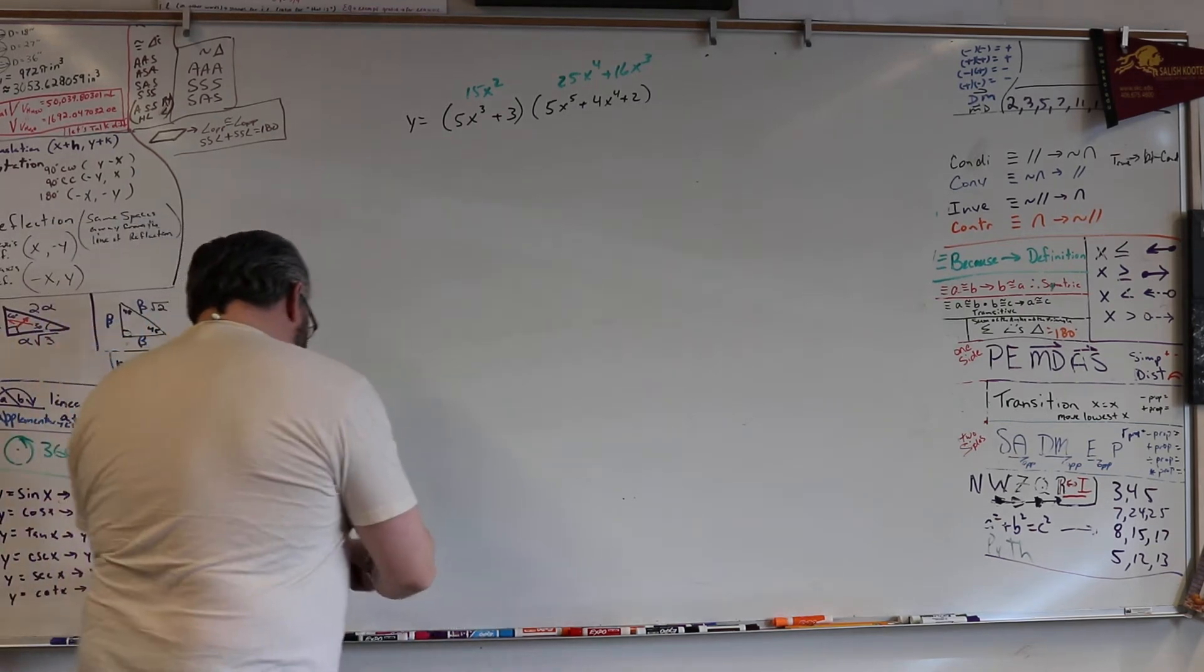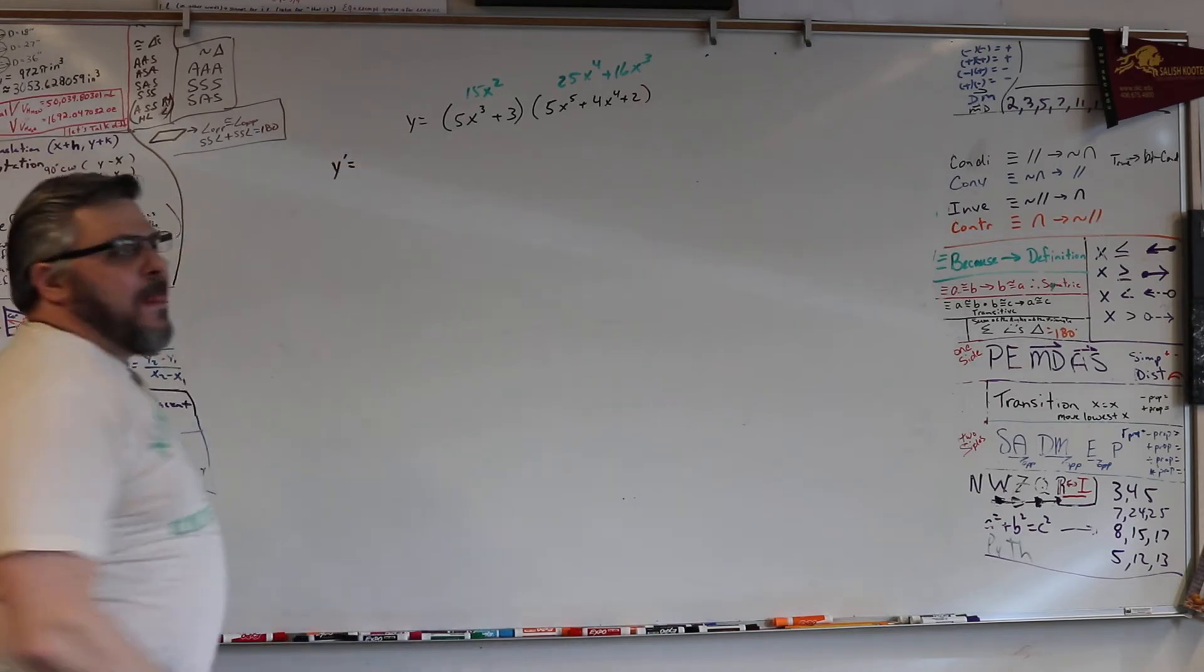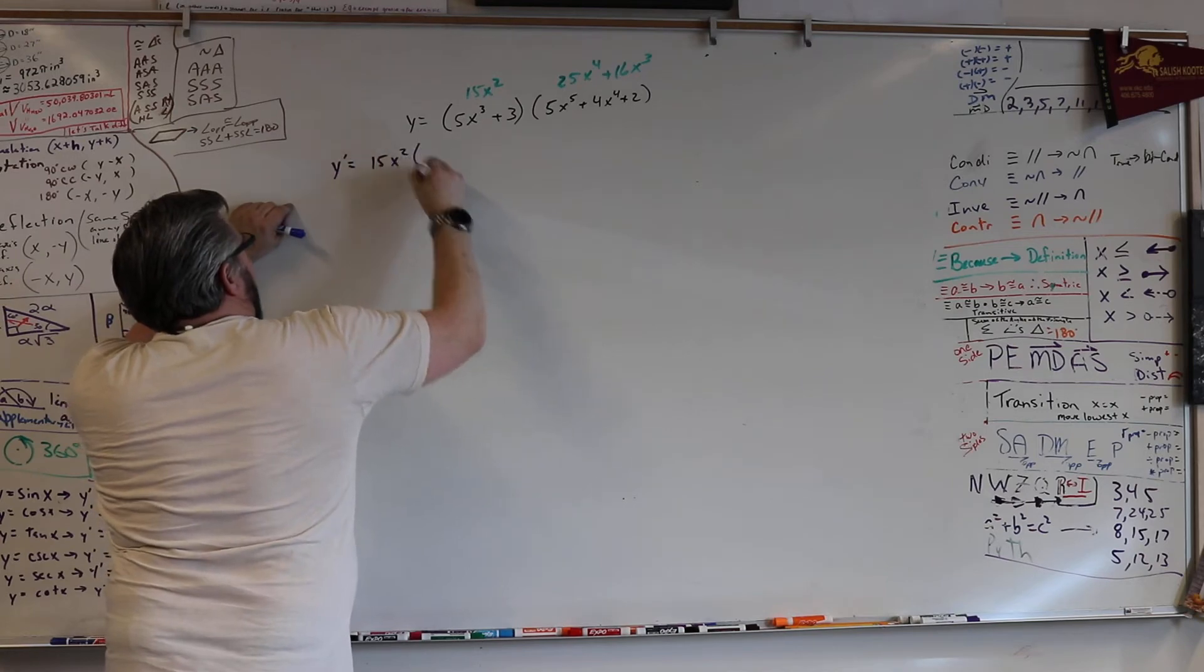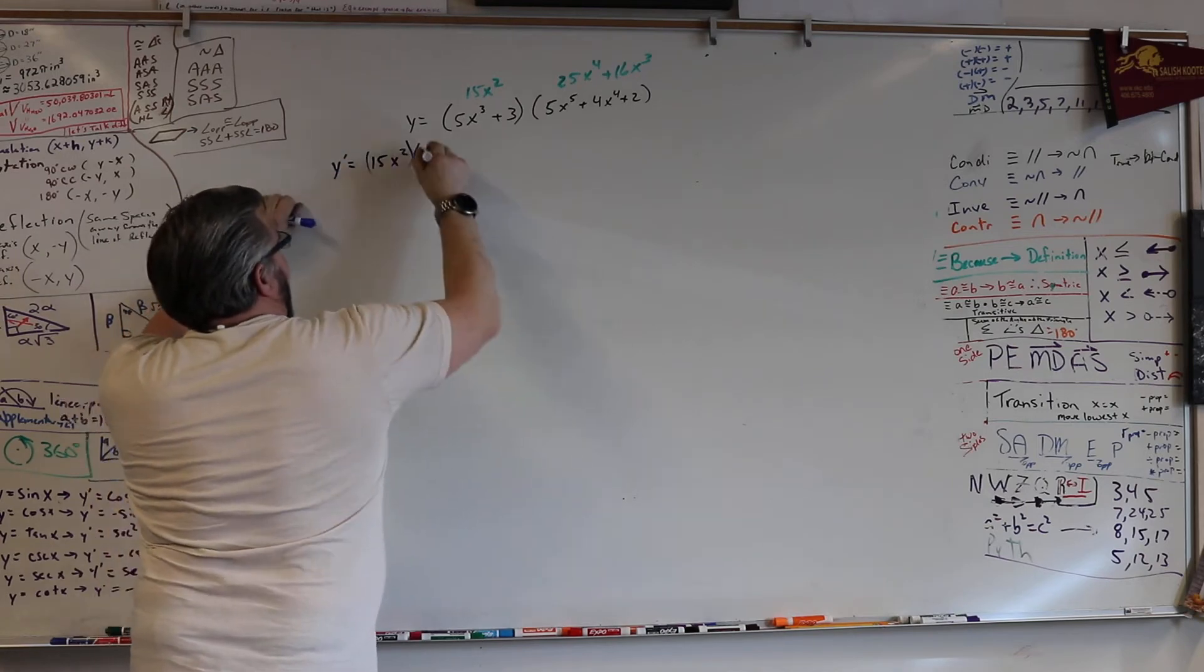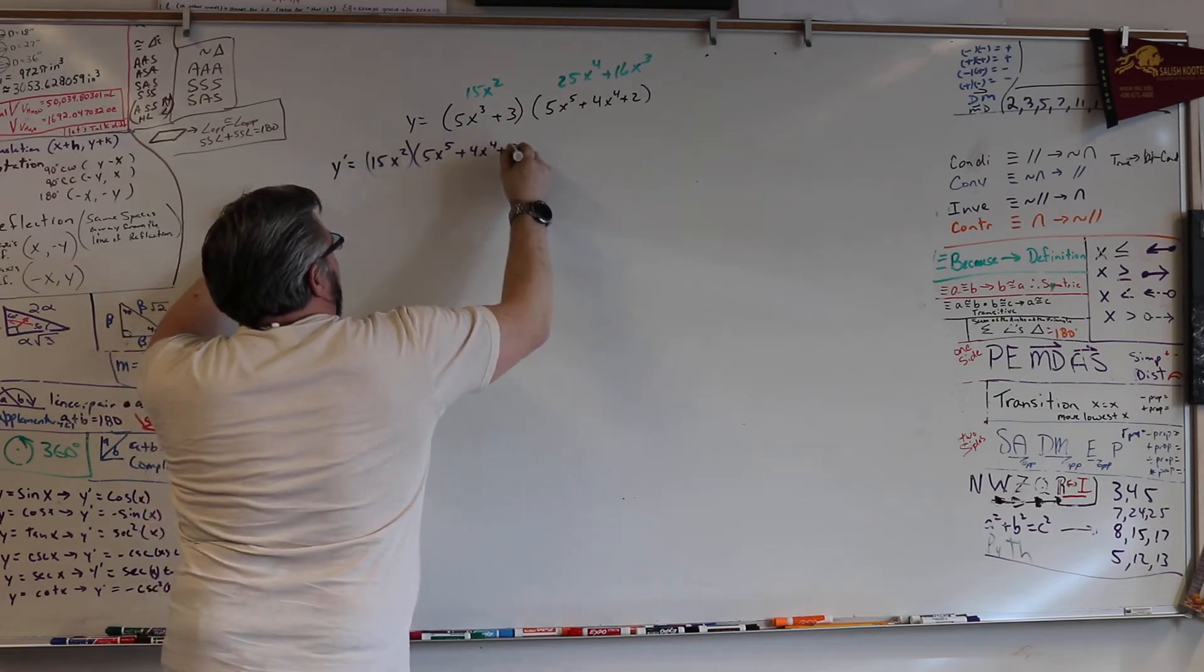Now let's put them together. Help me out. Y prime equals what? 15x squared. 15x squared times 5x to the 5th plus 4x to the 4th plus 2.